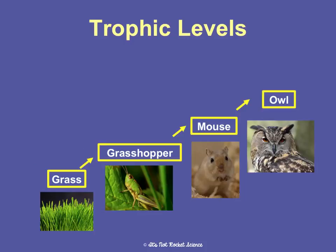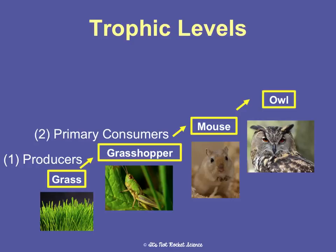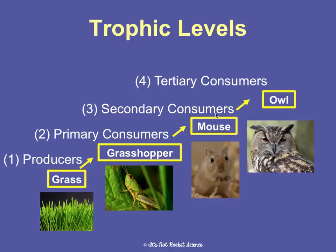Trophic levels are levels of nourishment. Producers are always the first trophic level — the base of all ecosystems. Since all energy comes from the sun and consumers can't directly use it, we rely on producers to start the food chains. The second level is primary consumers, like grasshoppers. The third is secondary consumers, the fourth is tertiary consumers, and the fifth is quaternary consumers. These are the different trophic levels, and they each have specific names referring to levels of nourishment in food chains.